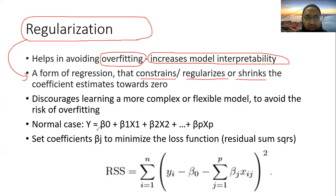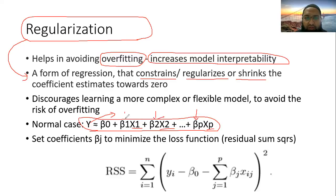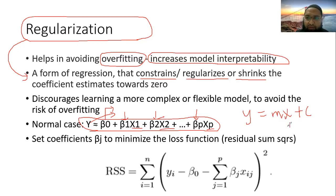In the normal regression case, y is the dependent variable and x1, x2, through xp are p independent variables. In regression, we learn these coefficients — beta 1, beta 2 — one coefficient for each independent variable, along with the intercept or y-intercept. In the case of a simple line, y equals mx plus c, we have one independent variable: m is like beta 1 and c is beta 0. We can map this equation to higher dimensions in this way.